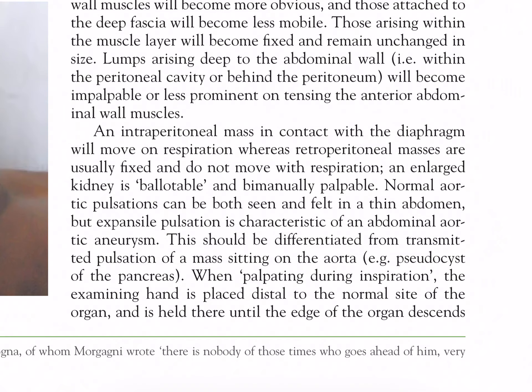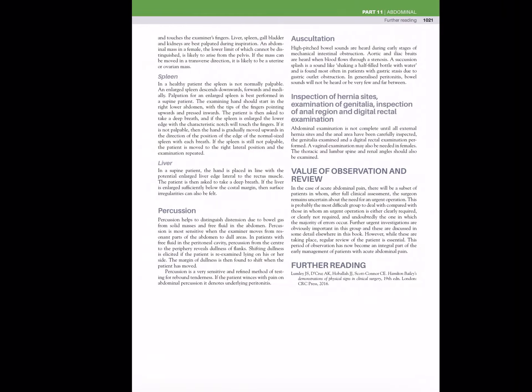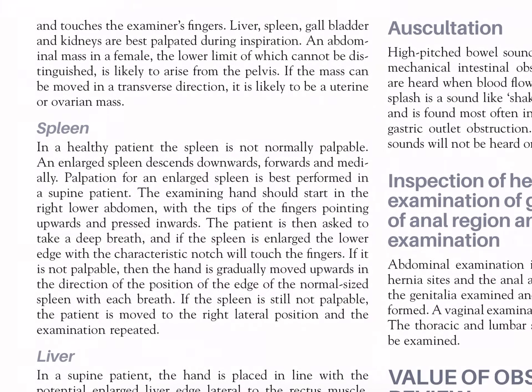An enlarged kidney is ballottable and bimanually palpable. Normal aortic pulsations can be both seen and felt in a thin abdomen, but expansile pulsation is characteristic of an abdominal aortic aneurysm. This should be differentiated from transmitted pulsations of a mass sitting on the aorta — for example, a pseudocyst of the pancreas. When palpating during inspiration, the examining hand is placed distal to the normal side of the organ and is held there until the edge of the organ descends and touches the examiner's fingers. Liver, spleen, gallbladder, and kidneys are best palpated during inspiration.